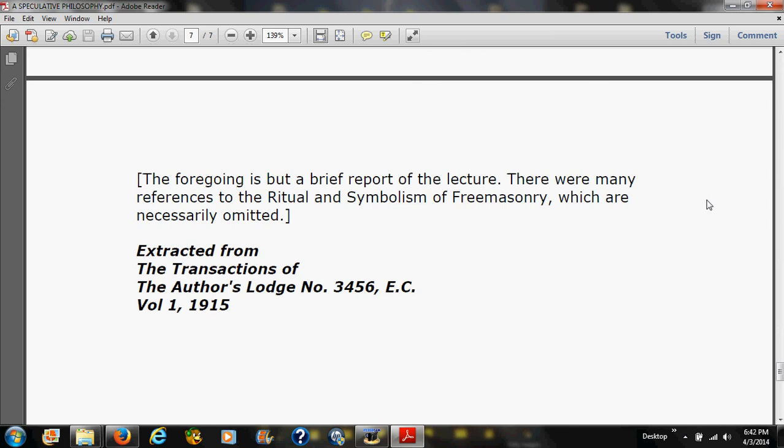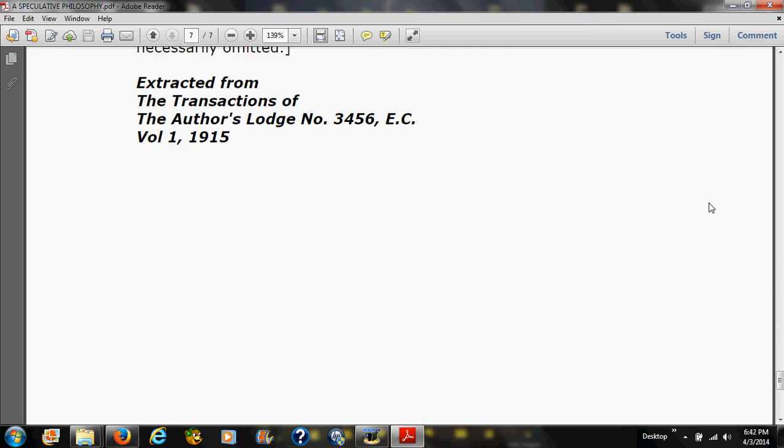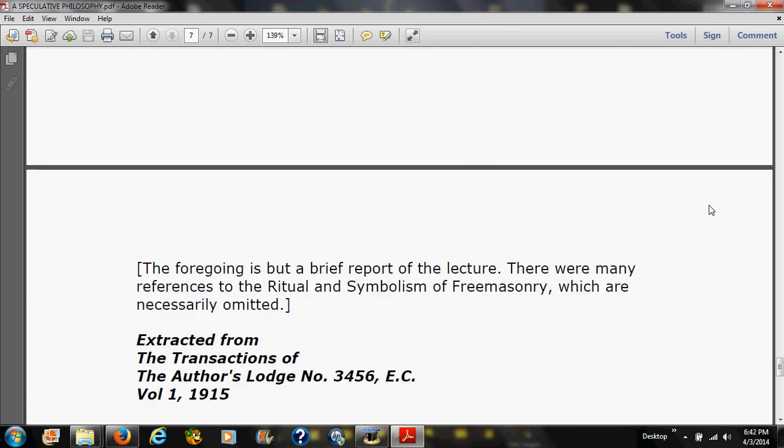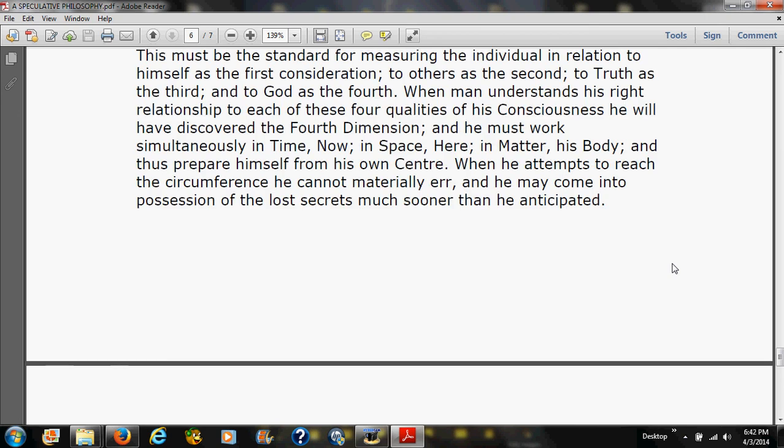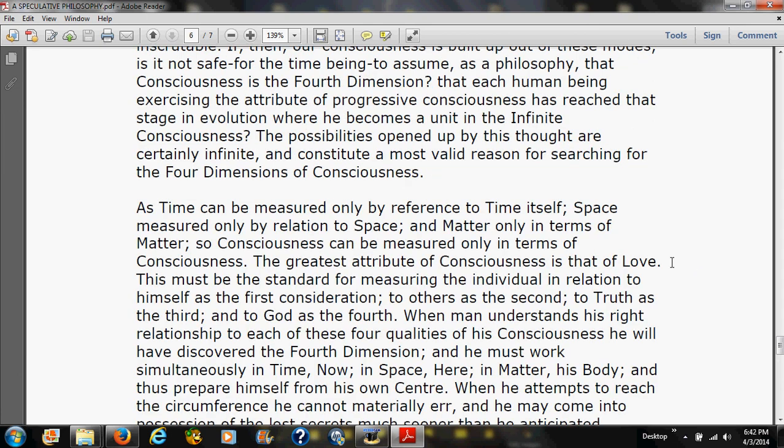The foregoing is but a brief report of the lecture. There are many references to the ritual and symbolism of Freemasonry of course which are omitted. This is extracted from the transactions of the author's lodge number 3456 in E.C. volume 1 in 1915. So that would make up for certain scientific discrepancies in the philosophy but the rest of it is overly apparent and thus a perfect reading for this channel and to stress the point that this channel was created for. And with that I thank you for joining me and we'll see you next time.